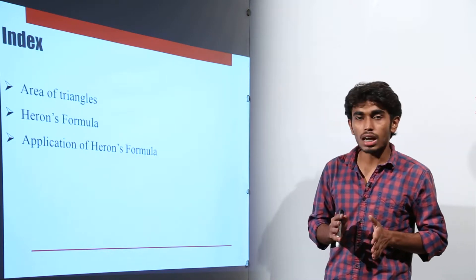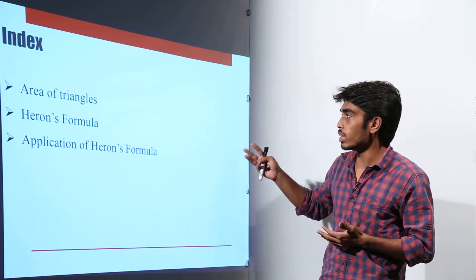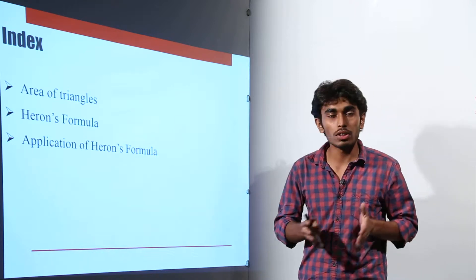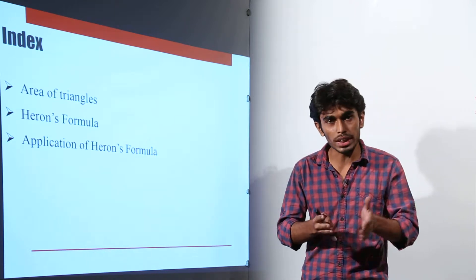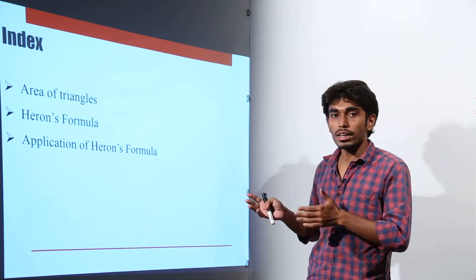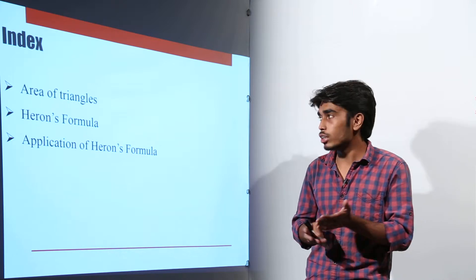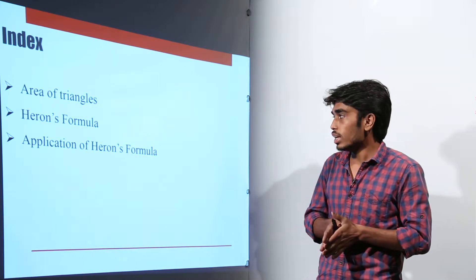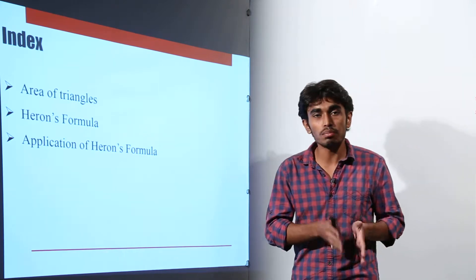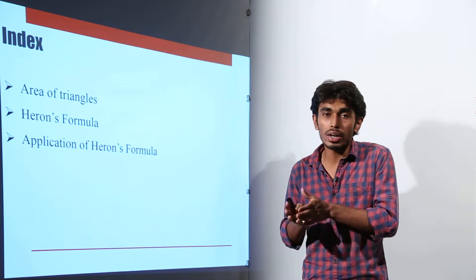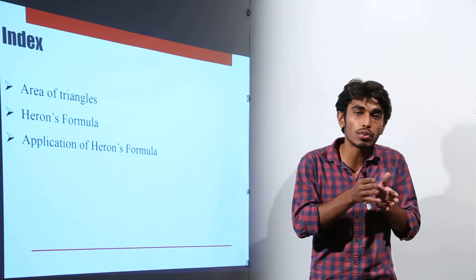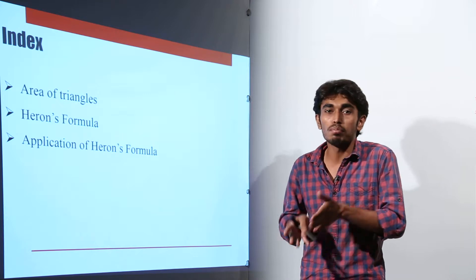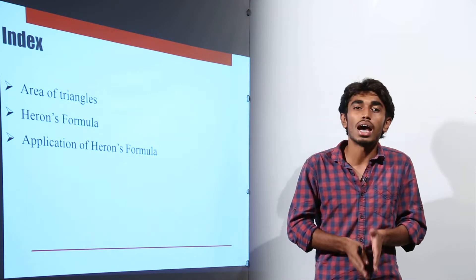In this chapter, we are going to deal with three things. First, we will find the area of triangles using the formulas we have studied so far. Then, we will find the area of those triangles using Heron's formula. After that, we will see some applications of Heron's formula — how it can be used to find the area of other figures such as quadrilaterals, parallelograms and rhombus.